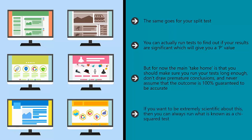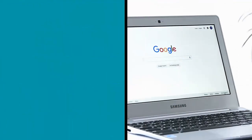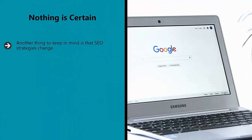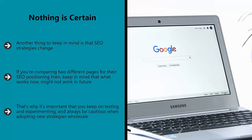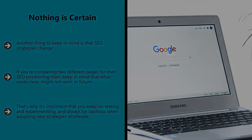If you want to be extremely scientific about this, then you can always run what is known as a chi-squared test. This is a test of significance — a calculation that takes numbers, crunches them, and provides a p-value. You can use the number of impressions on each page in order to do this, or the page ranking over a given amount of time. Nothing is certain. Another thing to keep in mind is that SEO strategies change — what was a great SEO strategy once can change on a dime once Google decides to change its mind. That's why it's important that you keep on testing and experimenting, and always be cautious when adopting new strategies wholesale.